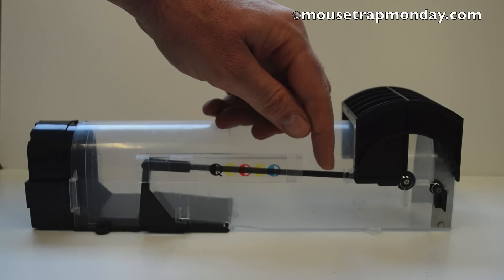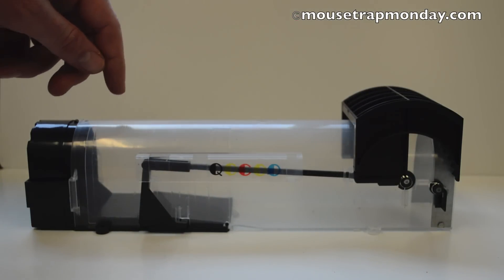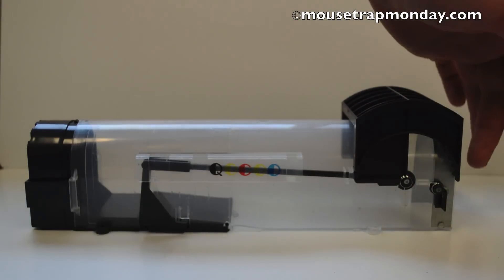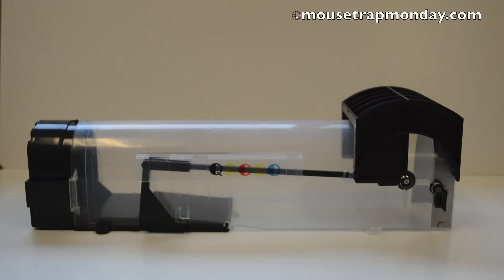So what happens is the mouse or rat enters through the front of the trap, comes through to get the bait, and steps on that trigger pad and releases that door and it's caught.